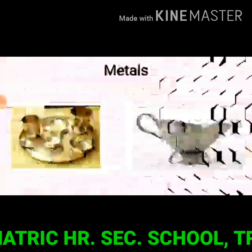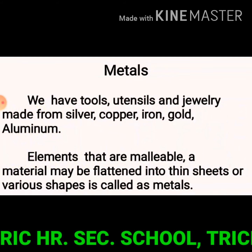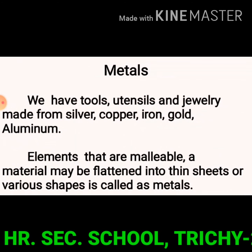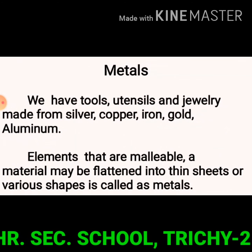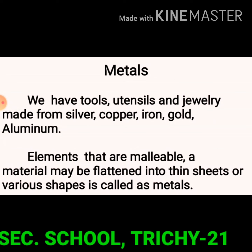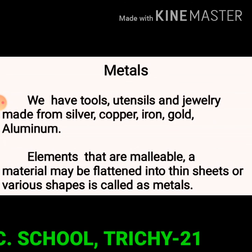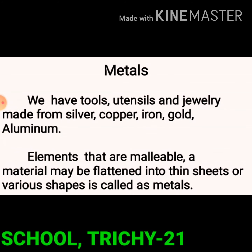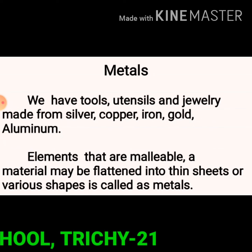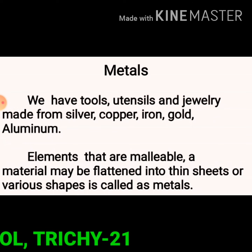We have tools, utensils, and jewelry made from silver, copper, iron, gold, and aluminum. Using pressure like hammering or rolling, we can deform these materials into various shapes. Such elements that are malleable — meaning a material that may be flattened into thin sheets or various shapes — are called metals.